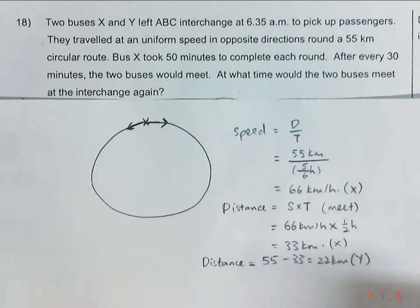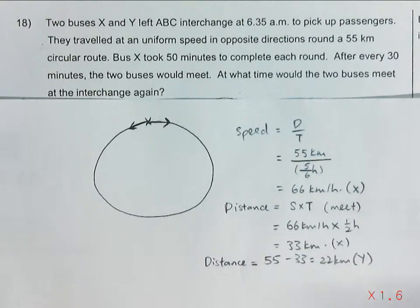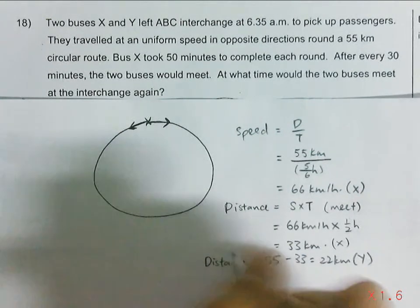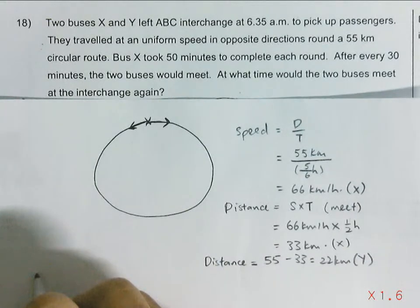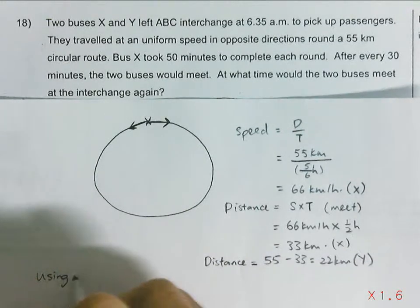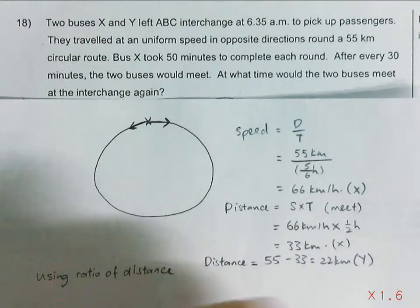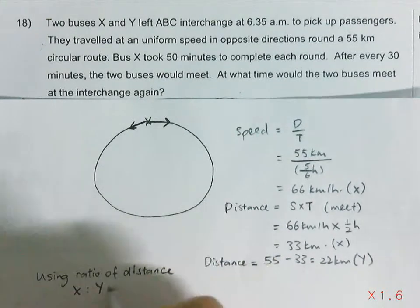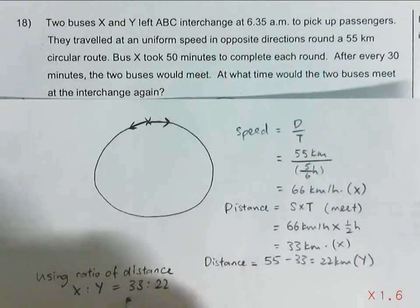Now with the distances, we can easily get a ratio. So let's find out the ratio of the distances traveled along this circular route by X and Y. So using the ratio of distance, 33 is to 22, which is 3 is to 2.